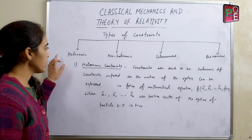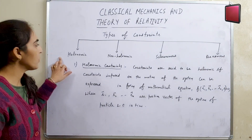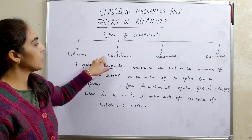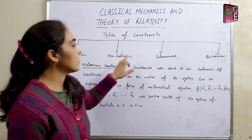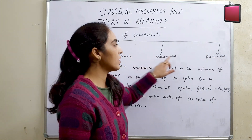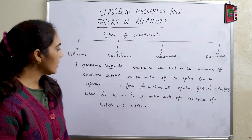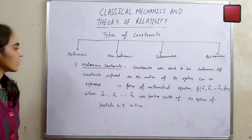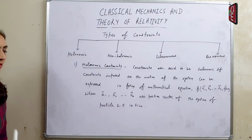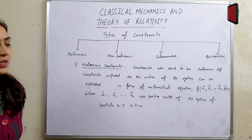These are the examples of constrained motion. Next are types of constraints. There are four types of constraints: first is holonomic, next is non-holonomic, then scleronomous, and then rheonomous.